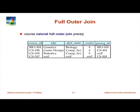Finally, there is a full outer join. Course natural full outer join preserves rows from both sides. CS315 from course has no match in prereq, so it is preserved with a null value for prereq ID. Similarly, CS347 from prereq had no match in course, but it is preserved with null values for title, department name, and credits. The natural version of outer joins should now be clear.